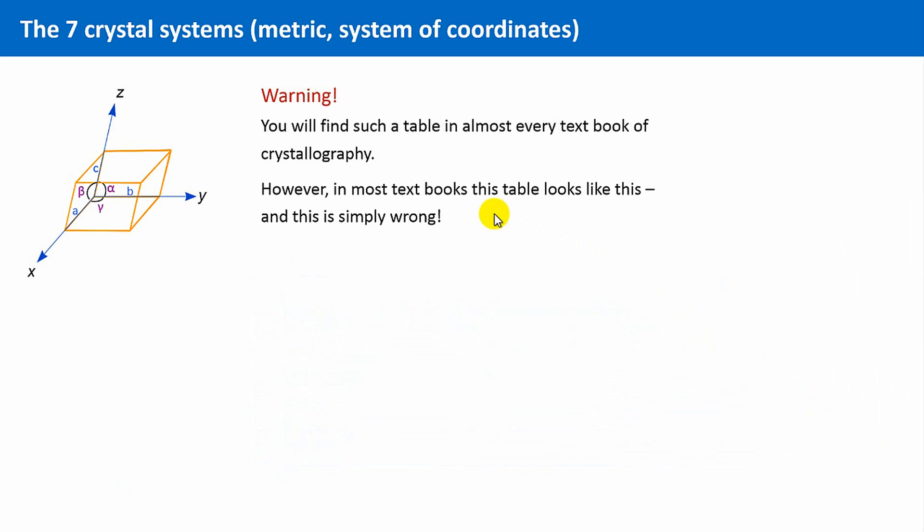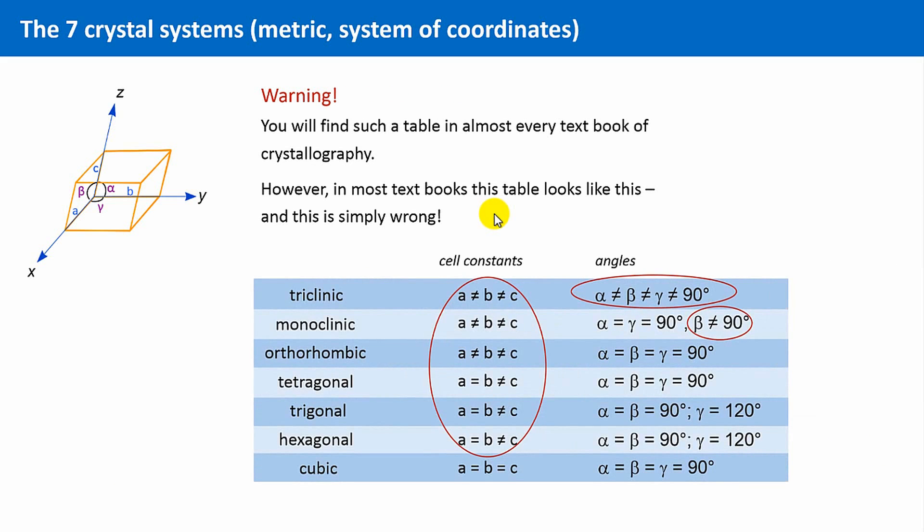Not the restrictions are tabled, but statements about the specific values of the cell dimensions and angles are made. Look for instance at the triclinic crystal system. The length of the unit cells should be allegedly all different and the angles too, and also unequal to 90 degrees. And this is simply wrong.